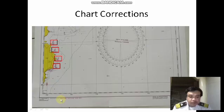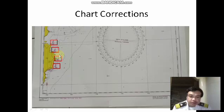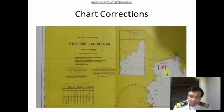Aside from the chart correction numbers, we also have manually drawn corrections on the chart. These include buoys. In a later part of the subject — perhaps week three or four — you will learn what these buoys are for. We also have another chart correction noted here.